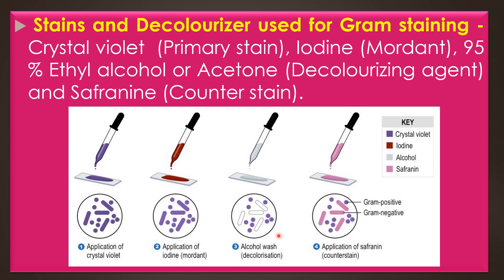Gram negative bacteria undergo decolorization due to the thin cell wall peptidoglycan and takes the counter stain, safranine, and appears pink in color. The decolorization step is an important step of the gram staining process, because it distinguishes gram positive from gram negative cells. If the decolorizer 95% ethyl alcohol or acetone remains on the sample for too long, it may decolorize the gram positive cells also and show false results.